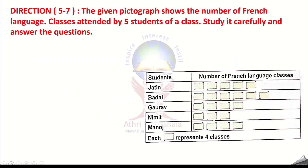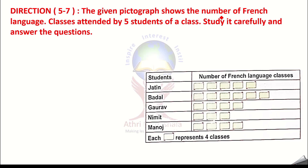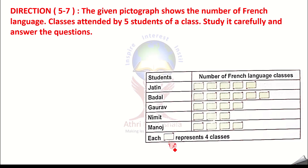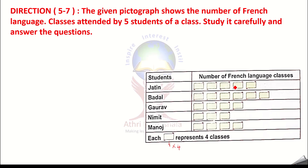This graph covers questions 5 to 7. The given pictograph shows the number of French and English language classes attended by 5 students. Each picture represents 4 classes. Student Jatin has 5 pictures, so 5 into 4 equals 20 classes. Badal has 6 pictures, so 6 into 4 equals 24 classes.